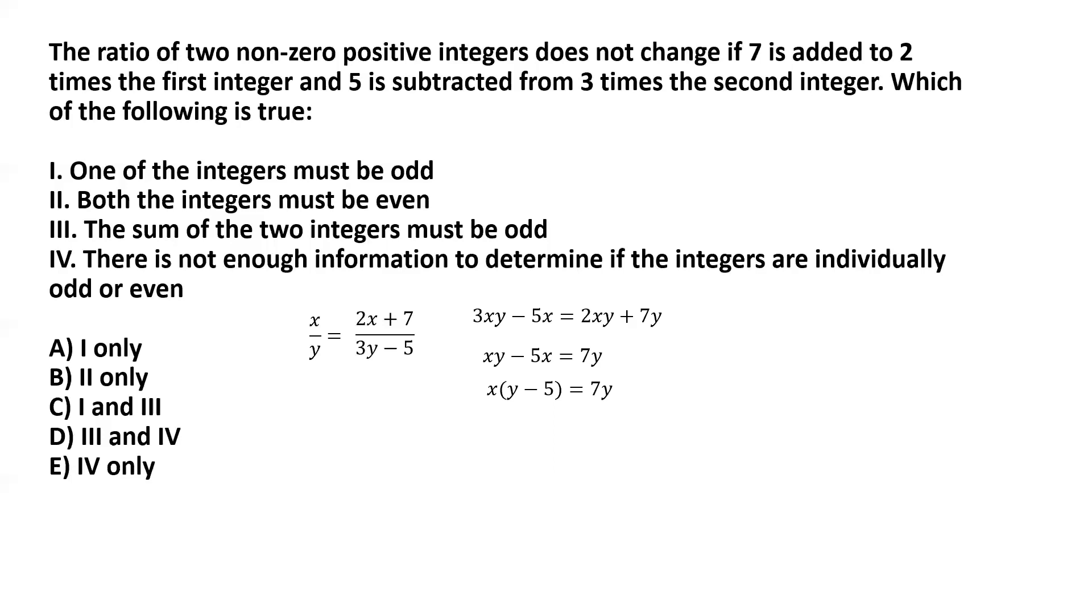Now let's consider the possibility that y is odd. If y is odd, then y minus 5 must be even, because when we subtract 5, which is an odd number, from y, which is assumed to be odd, the result must be even. Any non-zero positive integer multiplied by an even number should always be even. So if y minus 5 is even, then x multiplied by y minus 5 should also be even. That makes the left hand side an even number.